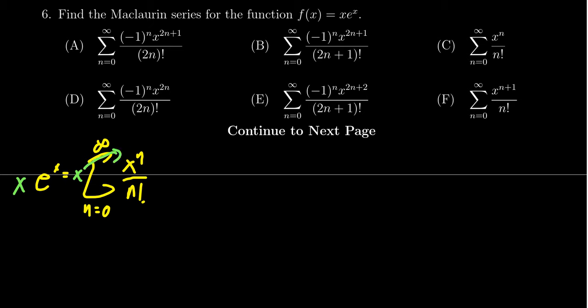This gives us the sum where n still goes from 0 to infinity—that didn't change—and the power of x is going to increase by 1. We get x^(n+1) over n factorial.